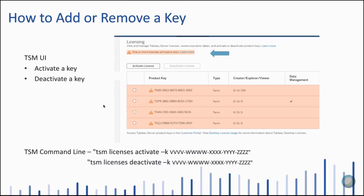Here's how to actually do these things in the TSM user interface. You'll see an Activate button on the left — simply click on that, a box will open up, and you can enter your product key to activate it. If you need to remove an old key, click the circle next to the key and the Deactivate License button will appear. This is also possible on the command line with TSM licenses activate or TSM licenses deactivate, where you specify which key you'd like to activate or remove.